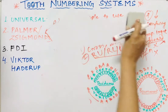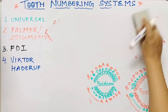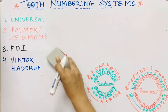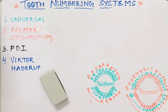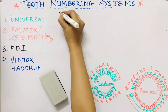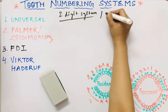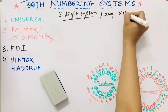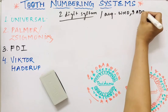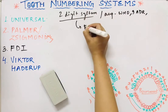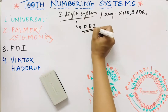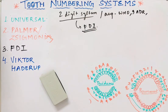The next system is the FDI system, also known as the two-digit system. This system is widely accepted by the WHO and the International Association of Dental Research. It was given by the FDI, which stands for Fédération Dentaire Internationale.